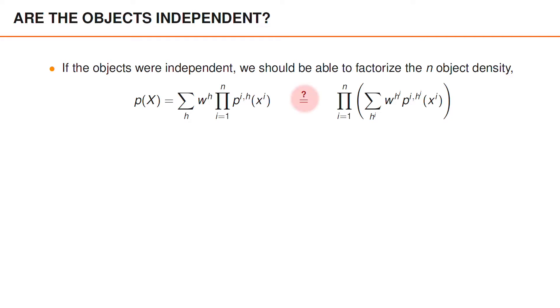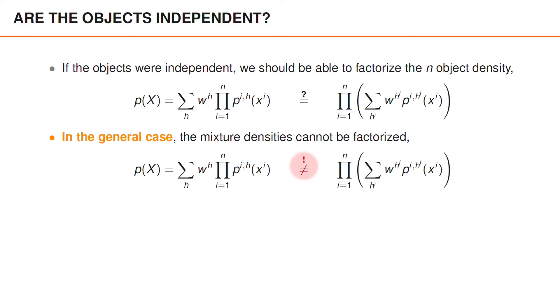So the question is, can we, in the general case, describe the n-object posterior as a product of mixture densities for each object, as written here on the right? And the answer is no. In the general case, the mixture densities cannot be factorized.